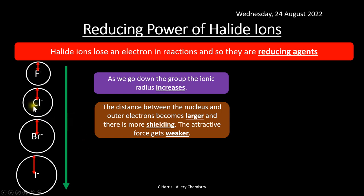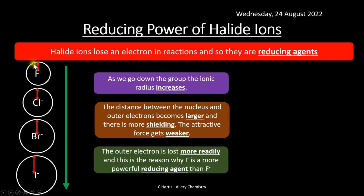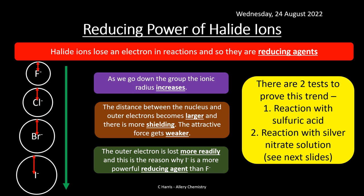There is more shielding between the nucleus and the outer shell, and the distance also increases, making the attractive force weaker. As we go down the group, electrons are lost much more readily. This is why iodide ions (I⁻) are much more powerful reducing agents than fluoride ions — iodide can lose that electron far more readily.